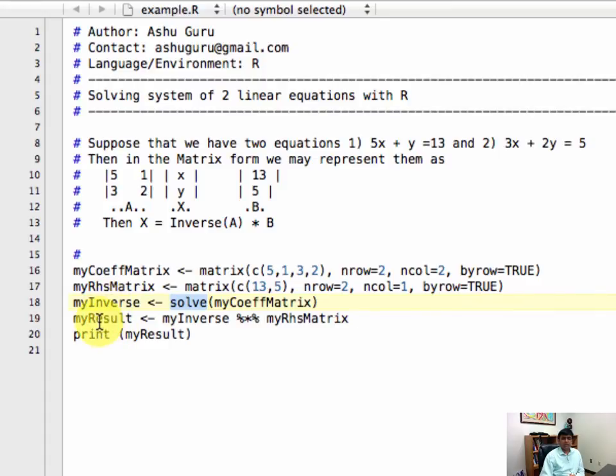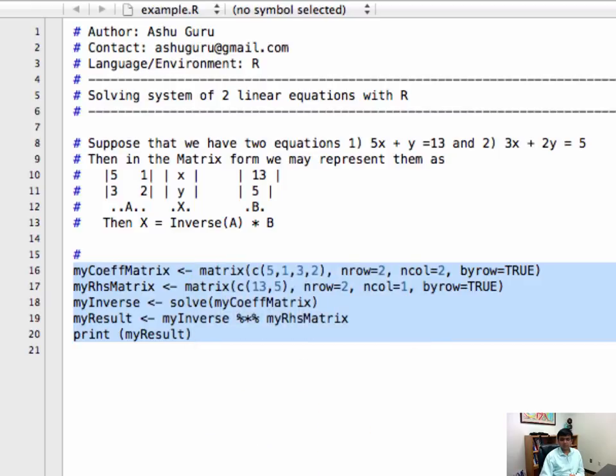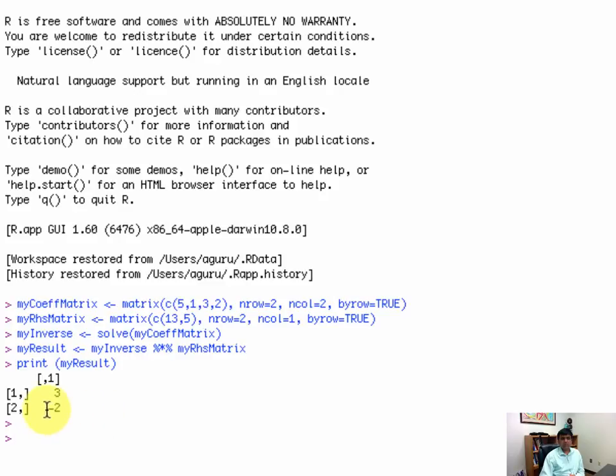And then you get the results by multiplying the inverse value with the right-hand side matrix, and we can print it. So here is what happens in the R console: we have the value of x is 3 and y is minus 2.